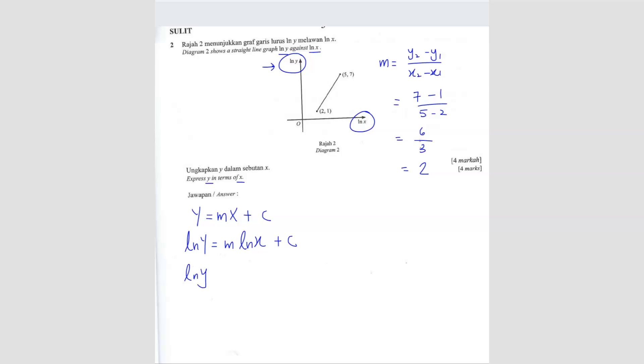So m value equals 2. We get ln y equals 2 ln x plus c. Now you want to find the c value. To find c, we can substitute any of this coordinate. We're going to take (2, 1) to make it easy. Are we going to write ln 1 equals 2 ln 2 plus c? The answer is no. This is wrong. Why?